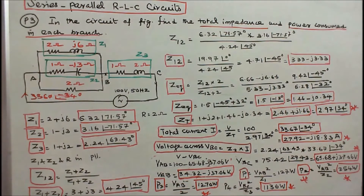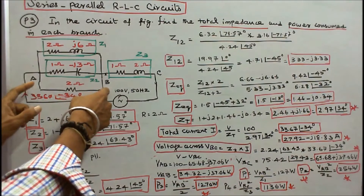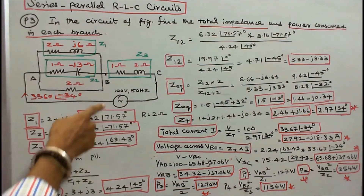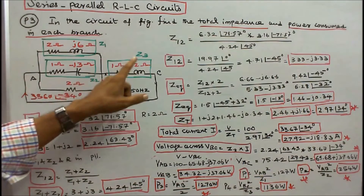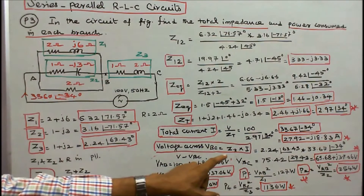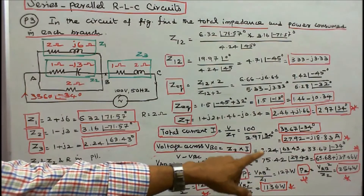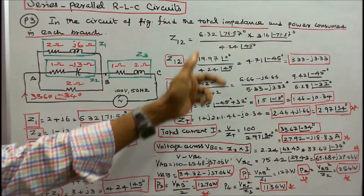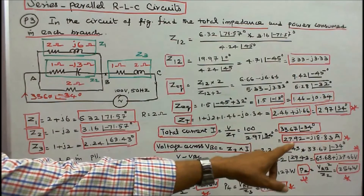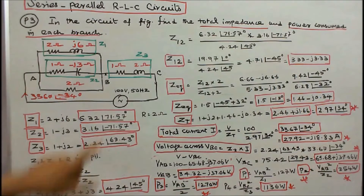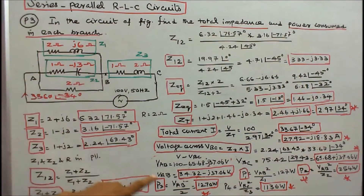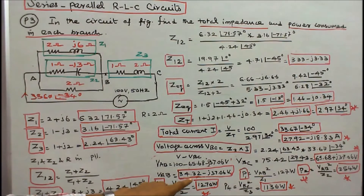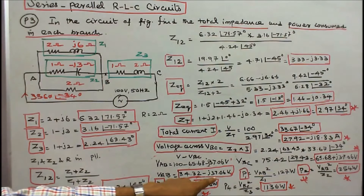Now I can find the voltage drop across A-B and across B-C. If total voltage is 100, I can find VBC = I·Z3 = 75.42∠29.43° in polar form, or 65.68 + j37.06 volts in rectangular form. The total voltage is 100, so VAB = 100 − VBC = 34.32 − j37.06 volts.